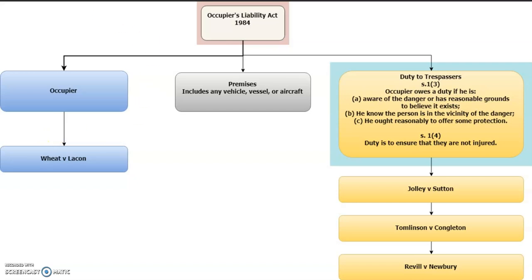The first issue we need to determine is whether our defendant is in fact an occupier. An occupier is given the same meaning as under the 1957 Act, section 1(2), which directs us to look at the common law and the case of Wheat v Lacon. That case provides the occupational control test for determining whether somebody is an occupier — that is, whether they retain occupational control over the premises. There may also be more than one occupier of the same premises.